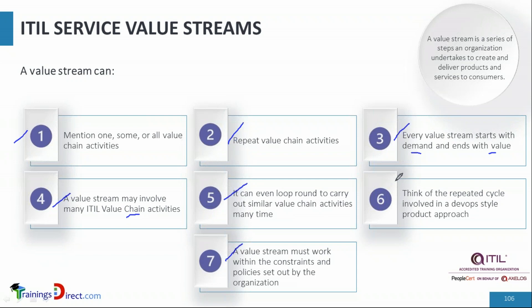When we look at repetition and looping, we can look at DevOps. In DevOps there is a lot of automation and things may be repeated — for example, building the code or deploying the code on several systems. So we repeat the deployment of code on several systems, which is a good example of looping within a value stream.